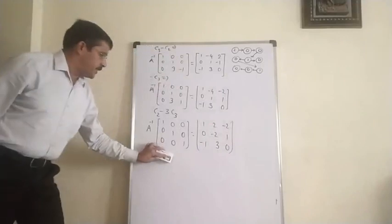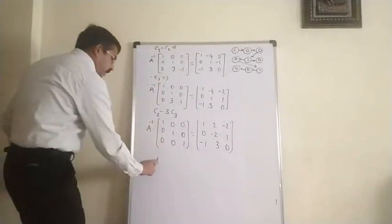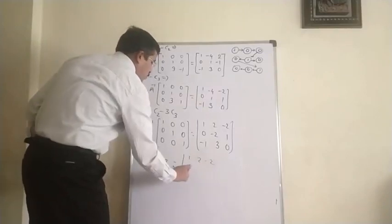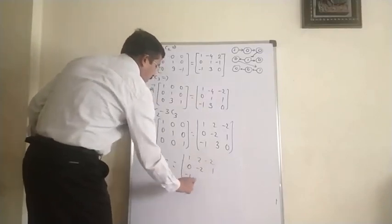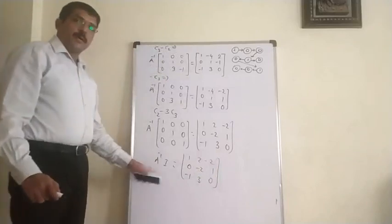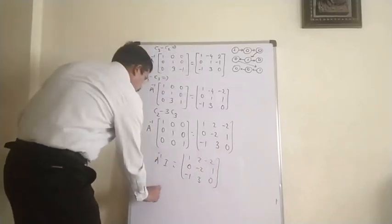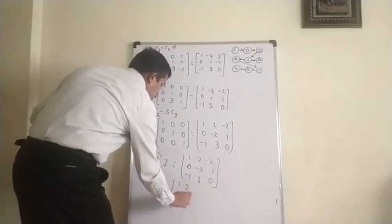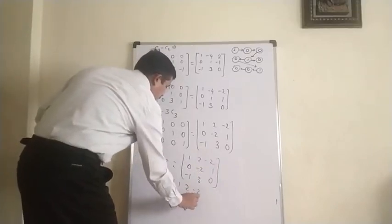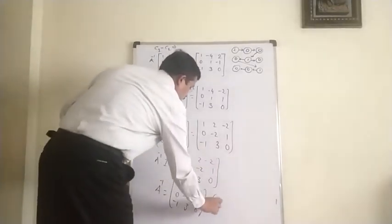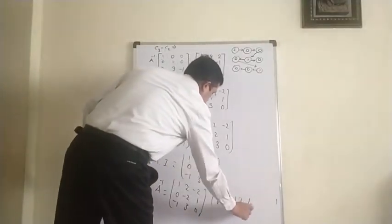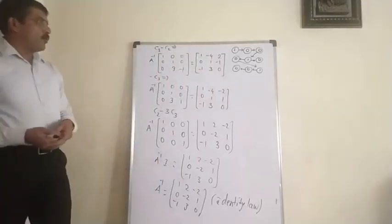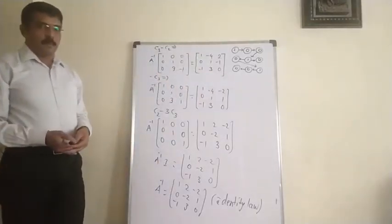Now this left matrix is the identity matrix. We can write A inverse into I equals the resulting right-side matrix. By the identity law, A inverse into I equals A inverse. Therefore, A inverse is equal to the matrix: 1, 0, minus 1; 2, minus 2, 3; minus 2, 1, 0. This is the method to find the inverse by column transformation. Thank you.